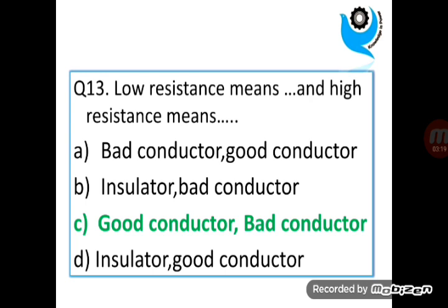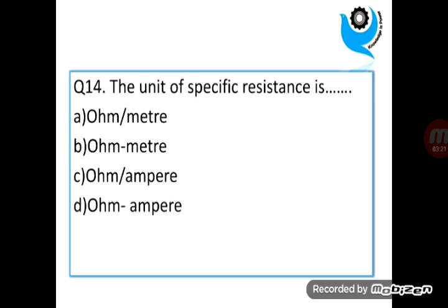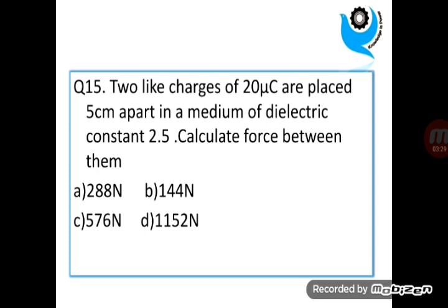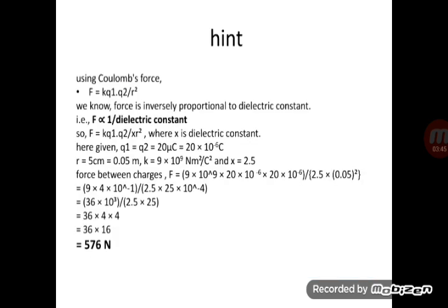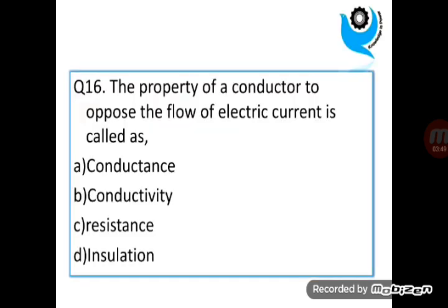Question 14. The unit of specific resistance is Ohm meter. Question 15. Two light charges of 20 micro coulomb are placed 5 cm apart in a medium of dielectric constant 2.5. Calculate the force between them. Answer is C. Hint is given.